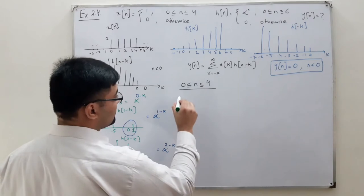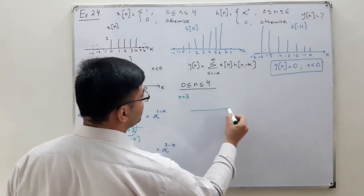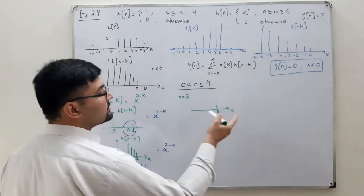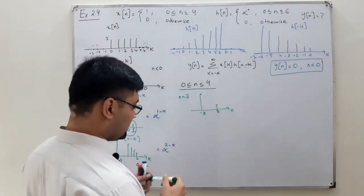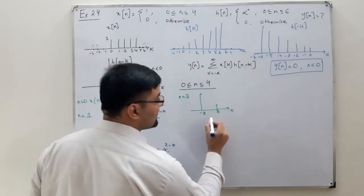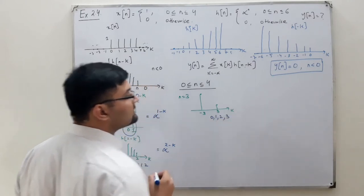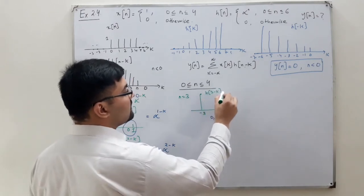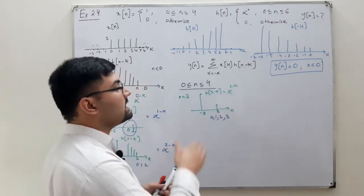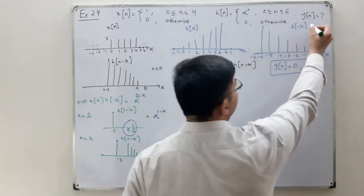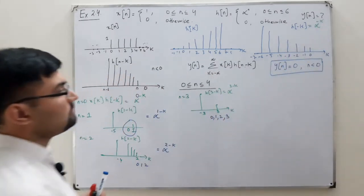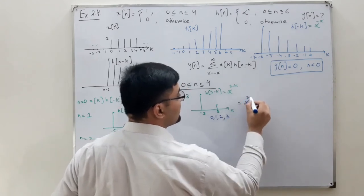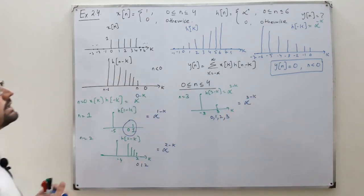For n = 3, you shift to 3 units. The minimum position is at k = 3 and the maximum position is at n minus 6, which is minus 3. The function x[k] still covers k = 0 to 4, so the overlap is at k = 0, 1, 2, and 3. h[3−k] is alpha to the power 3 minus k, since alpha^(−k) shifted right by 3 gives alpha^(3−k). Multiplied by 1, the answer is alpha^(3−k).